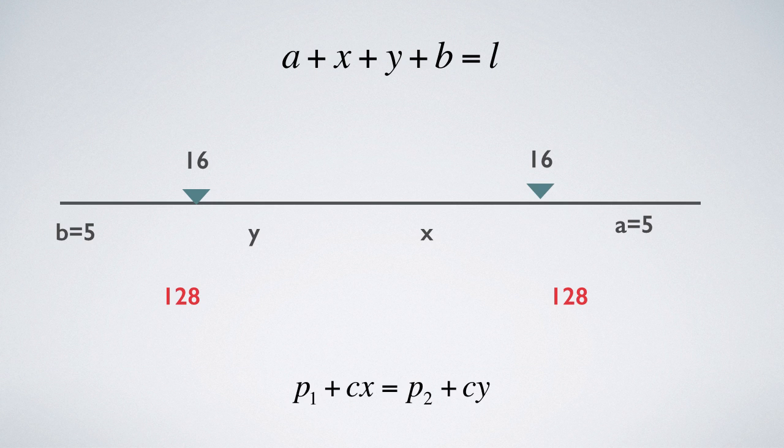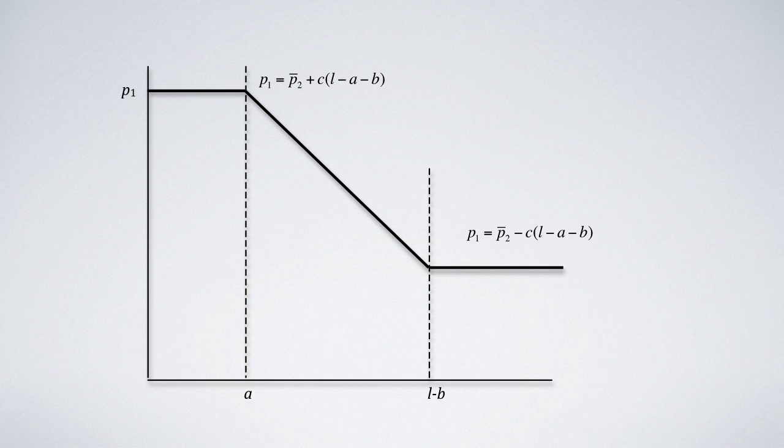However, instead of moving further inward, seller 1 now has another strategy. If seller 1 sets the price lower than this, it can capture the whole market. The profit is then this price times the whole length. Would this profit be greater than 128?